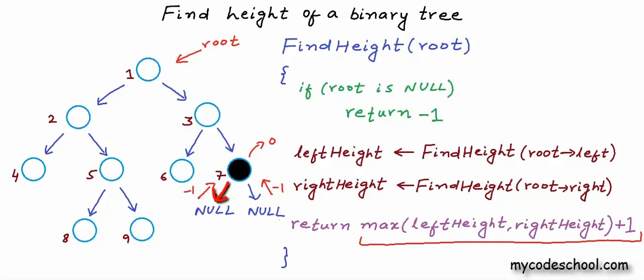So this is pseudo code for my function to find height of a binary tree. Some people define height as number of nodes in longest path from root to a leaf node. We are counting edges here and this is the right definition.